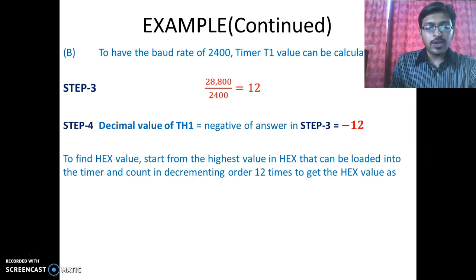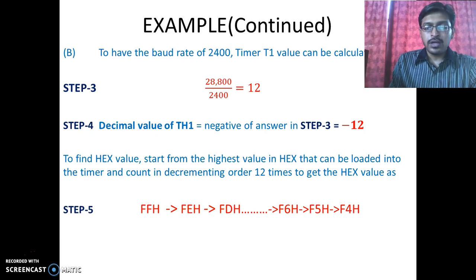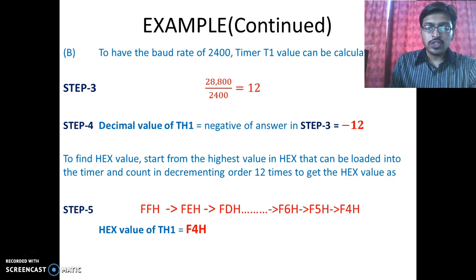To get the corresponding hex value, we again start from the highest value in hex that can be loaded into TH1, which is FFH, and count down in decrementing order 12 times. We get the value equal to F4H. So F4H is the hex value to be loaded into TH1 to have a baud rate of 2400.